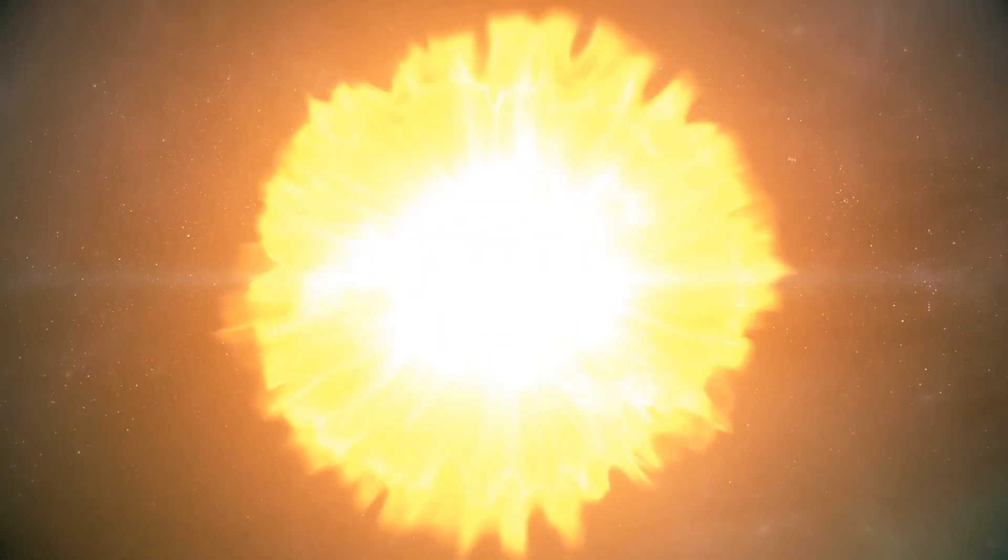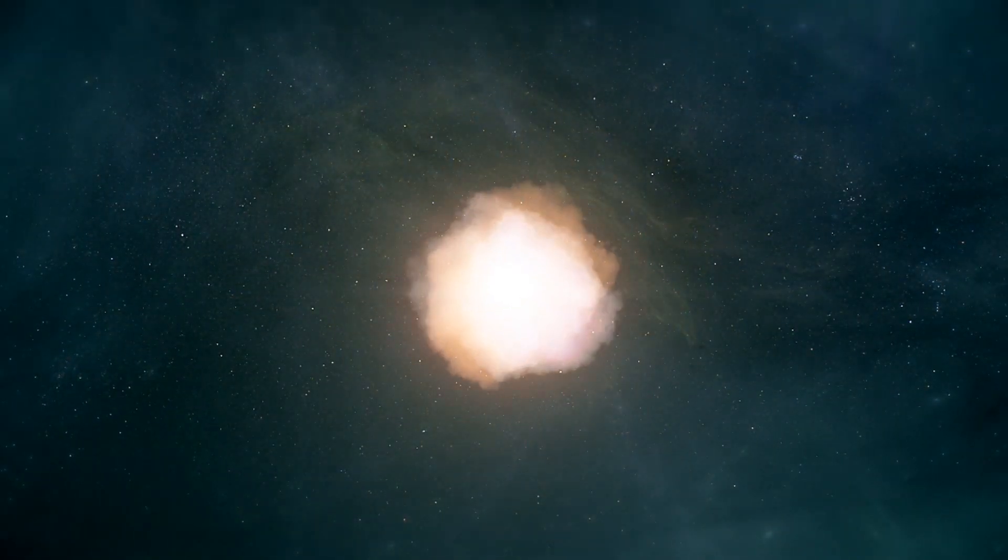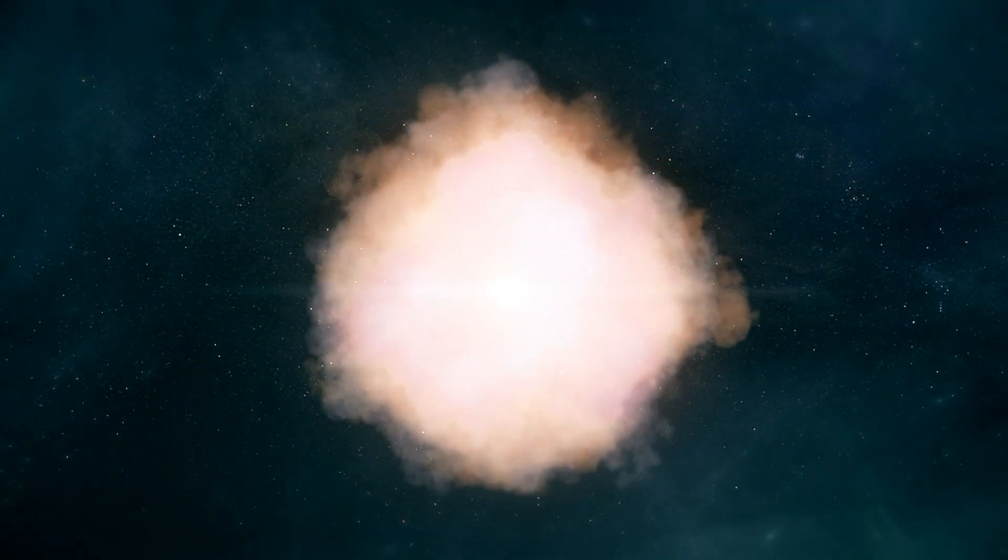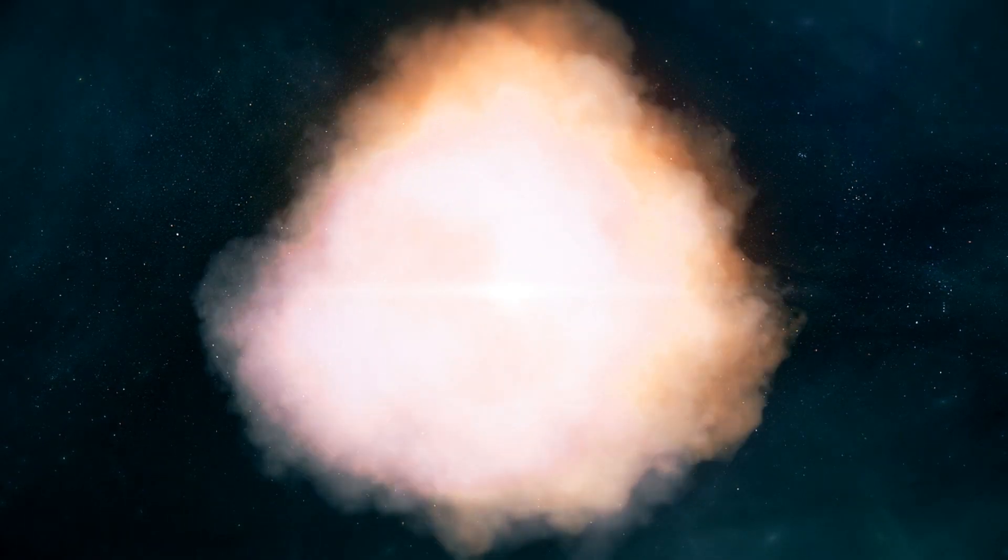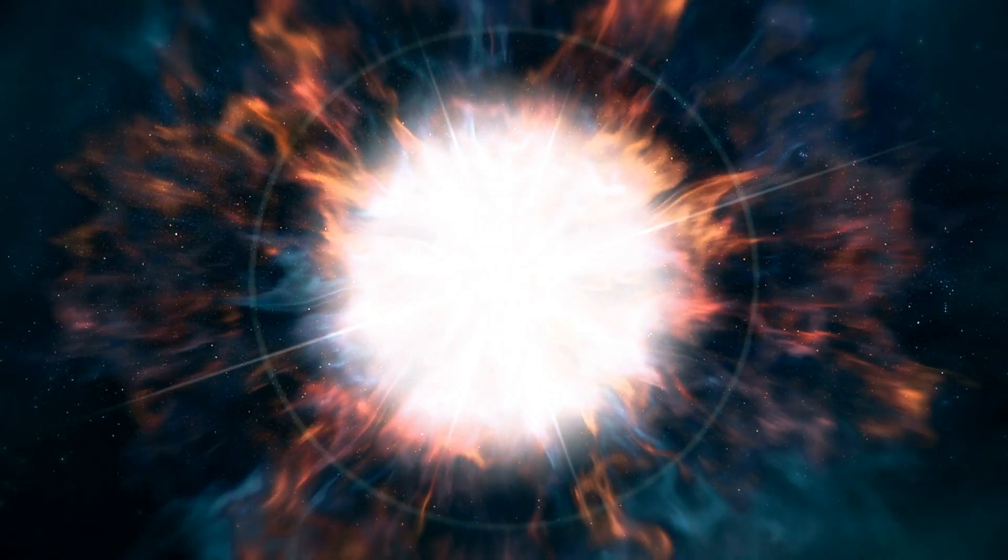Scientists from the University of Illinois theorized that a supernova approximately 65 light-years from Earth triggered the late Devonian extinction, one of the five great mass extinction events in our planet's history.